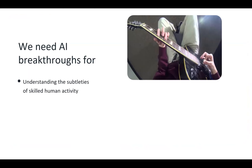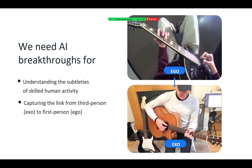Why would we want to understand human skill in video? I motivated the ability to have AR assistance for learning new skills as a human user, or to transfer what humans do to the actions of robots. But to really understand subtle skills — like exactly how a person is positioning their hands on a guitar, how they move them, and how they're holding the object — we need AI that captures these visual subtleties.